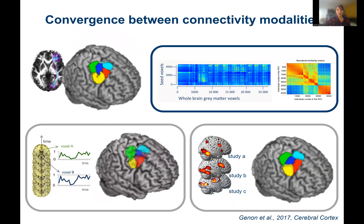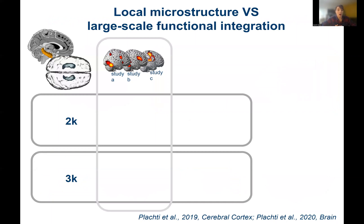However, if you look at parcellation studies in the literature, they often try to emphasize convergences between derived maps — especially connectivity-based maps — and maps derived from local microstructure, to validate the parcellation results. However, there are also a lot of divergences. These divergences reflect the fact that local microstructure versus connectivity features reflect different principles of brain organization. We should not a priori look for perfect convergence, because the different approaches probe different aspects of brain organization.